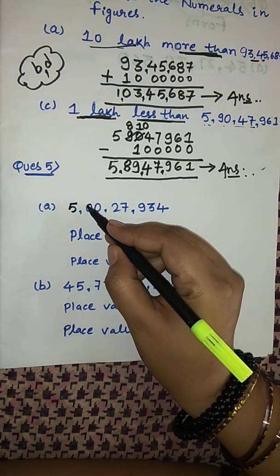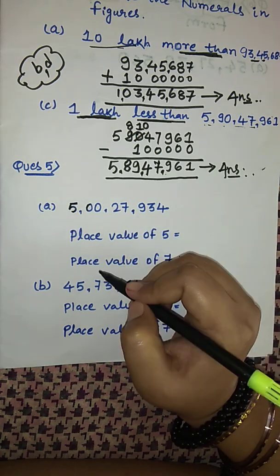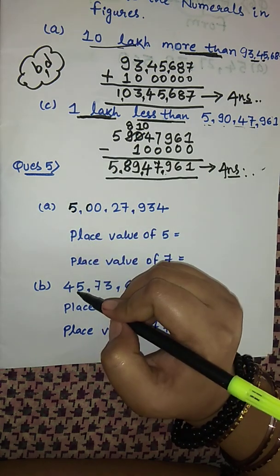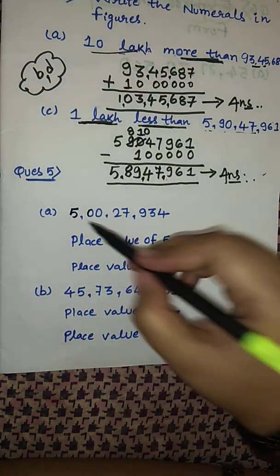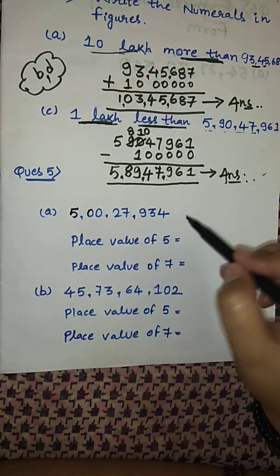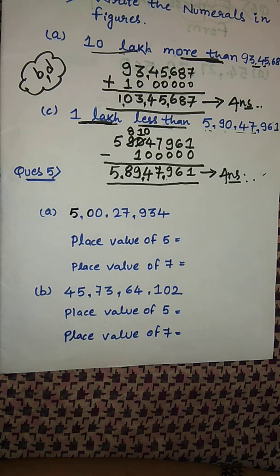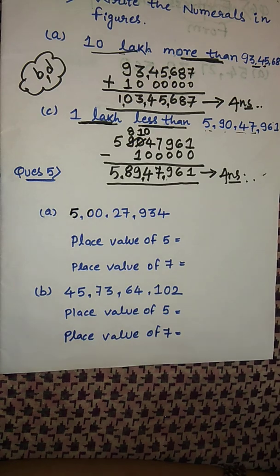Place value states the value of any digit in the number. For any digit in a given number, we can find out what its value is with the help of place value.